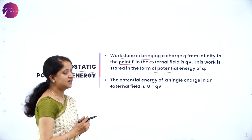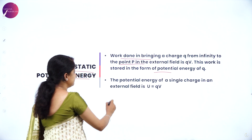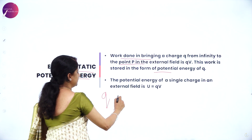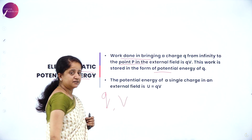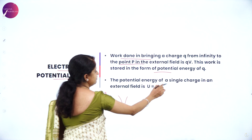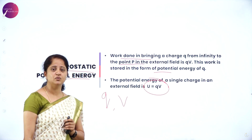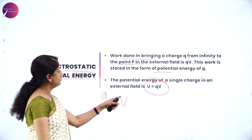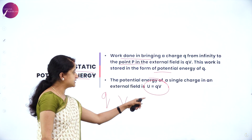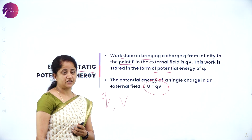So the potential energy of a single charge — say, a single charge Q which has a potential V — the potential energy in an external field for a single charge is given by U = QV, where U is potential energy, Q is the charge, and V is its potential.